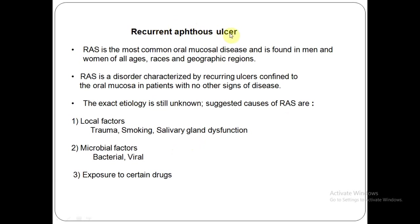Coming to recurrent apthous stomatitis — recurrent apthous ulcer — in short you can call it RAS, short for recurrent apthous stomatitis. Recurrent apthous stomatitis is the most common oral mucosal disease and is found in men and women of all ages, races, and geographic regions.